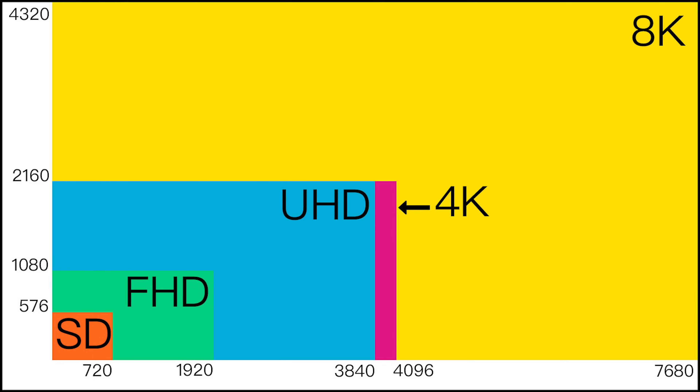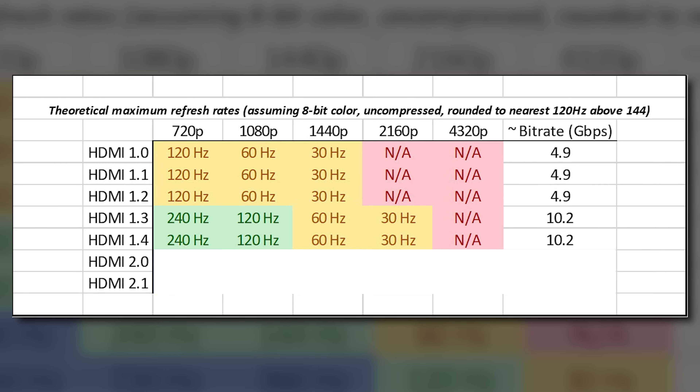Version 1.4 included a channel for internet connectivity between devices. ARC (audio return channels) were added, as well as support for 3D, which really didn't take off — people were polarized about it, some getting headaches from the fake 3D on TVs. This update also boosted the number of supported color spaces for rich, natural-looking images. The high-speed cable required for version 1.3 and 1.4 was notable — you needed a new cable to get the full experience.